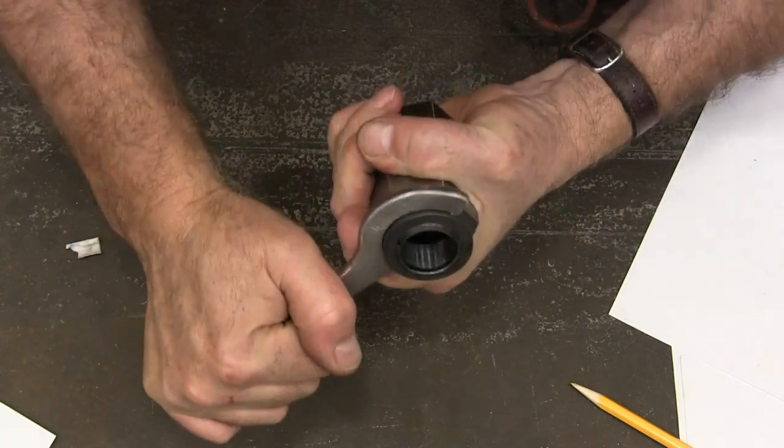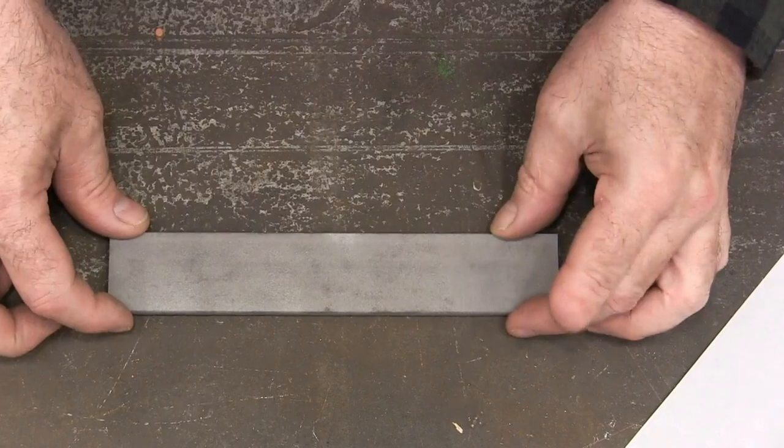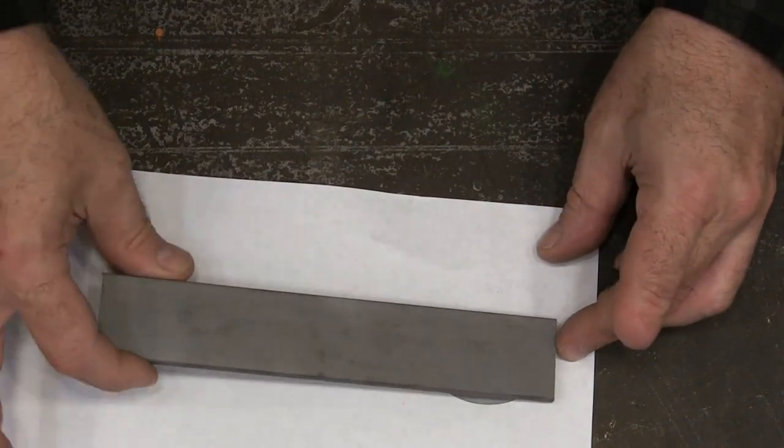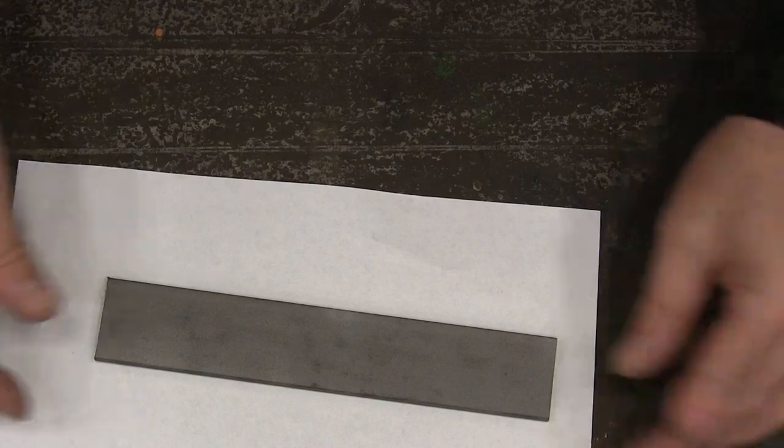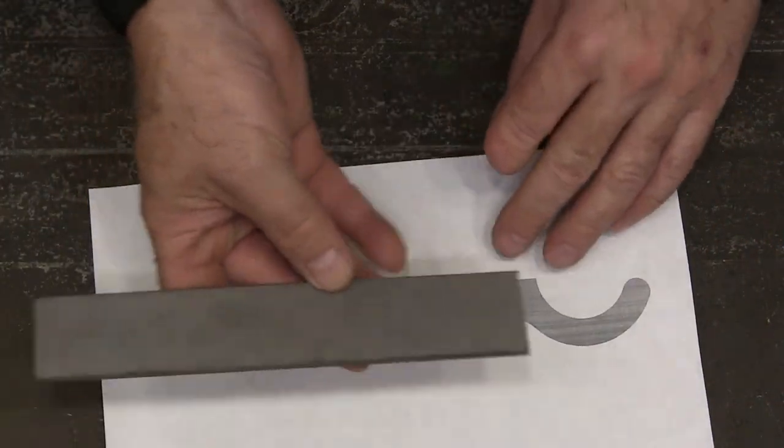All right, let's get started on making this spanner. This is the blank that I'm going to use. It's a piece of one and a half inch by a quarter inch hot rolled steel and it's just long enough, big enough to cover our part. I just sandblasted it to get the rust and the scale off.